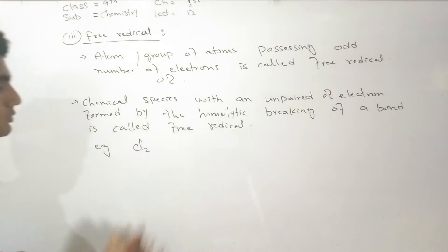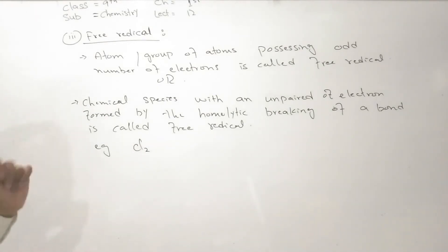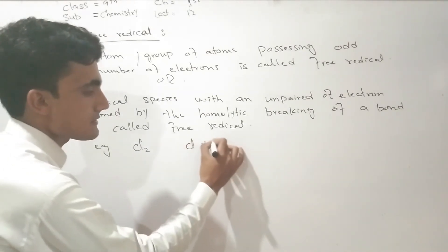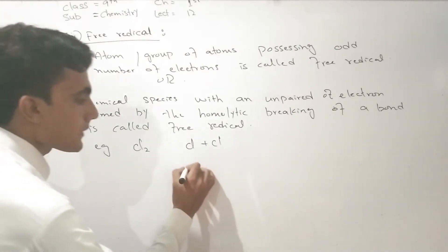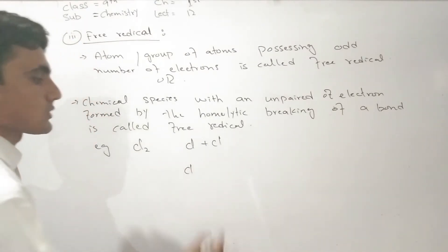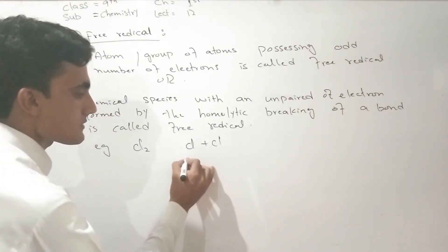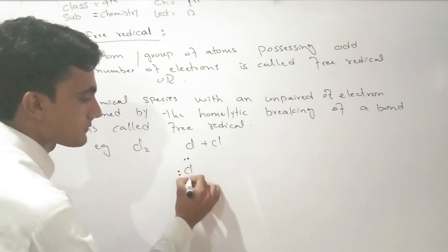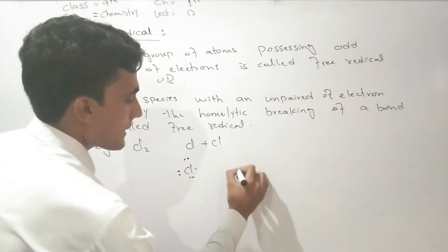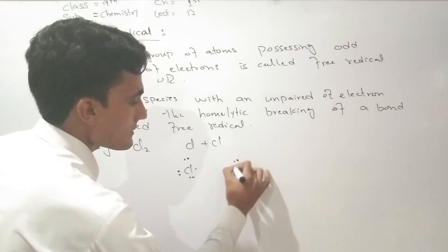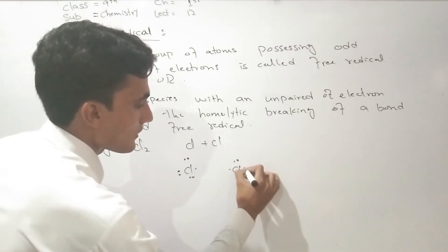For example, Cl2 is a chlorine molecule. Cl2 breaks into Cl plus Cl. Cl2 is a chlorine molecule that can undergo this type of breaking.